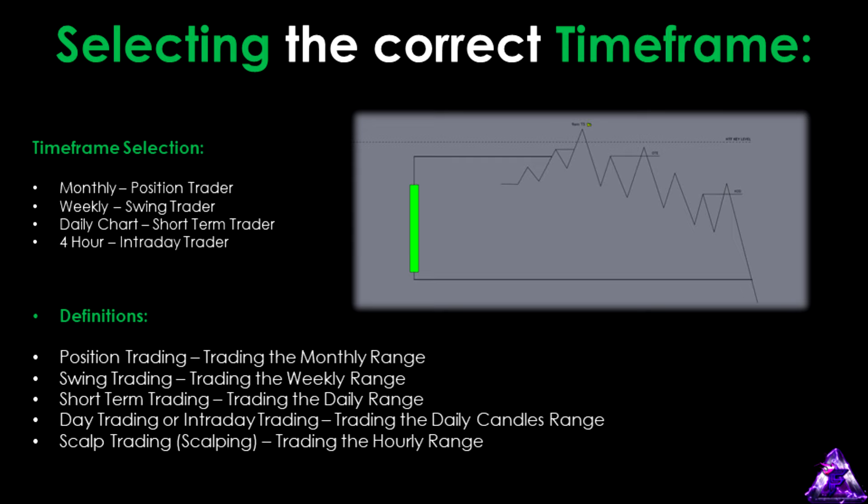Position trading is typically done by large institutions, hedge funds, and other big players with significant liquidity. These traders use the monthly chart due to issues like spread and slippage. Since we're retail traders focusing on intraday, short-term, or swing trades, our primary concern lies elsewhere.